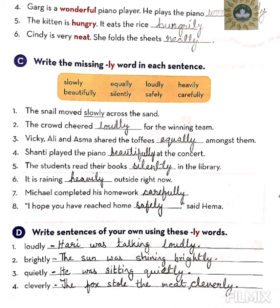Number 4: Gurg is a wonderful piano player. He plays the piano wonderfully. Number 5: The kitten is hungry — it eats the rice hungrily, H-U-N-G-R-I-L-Y.